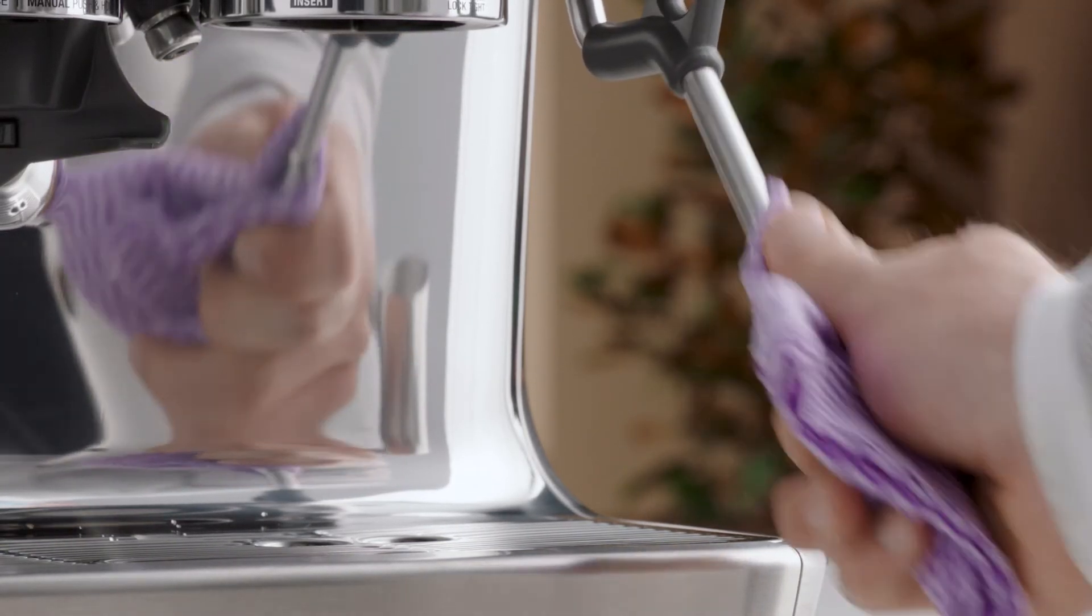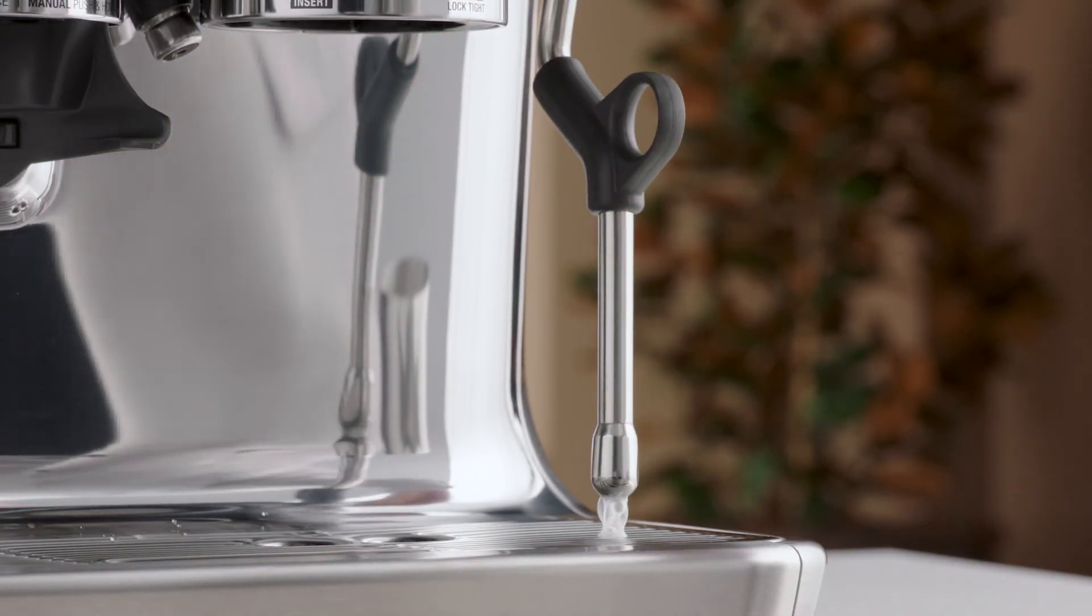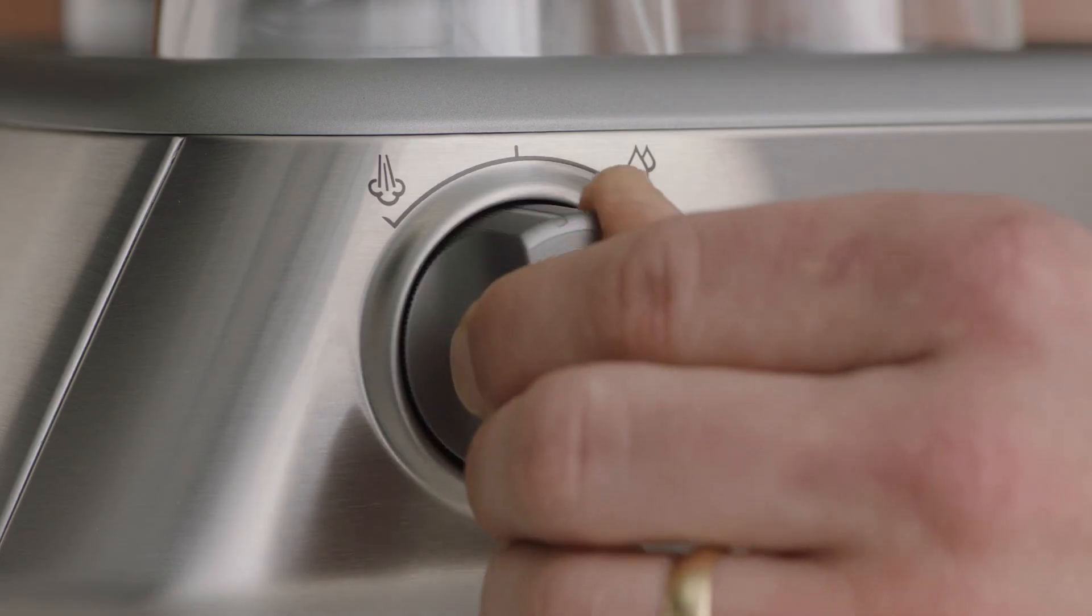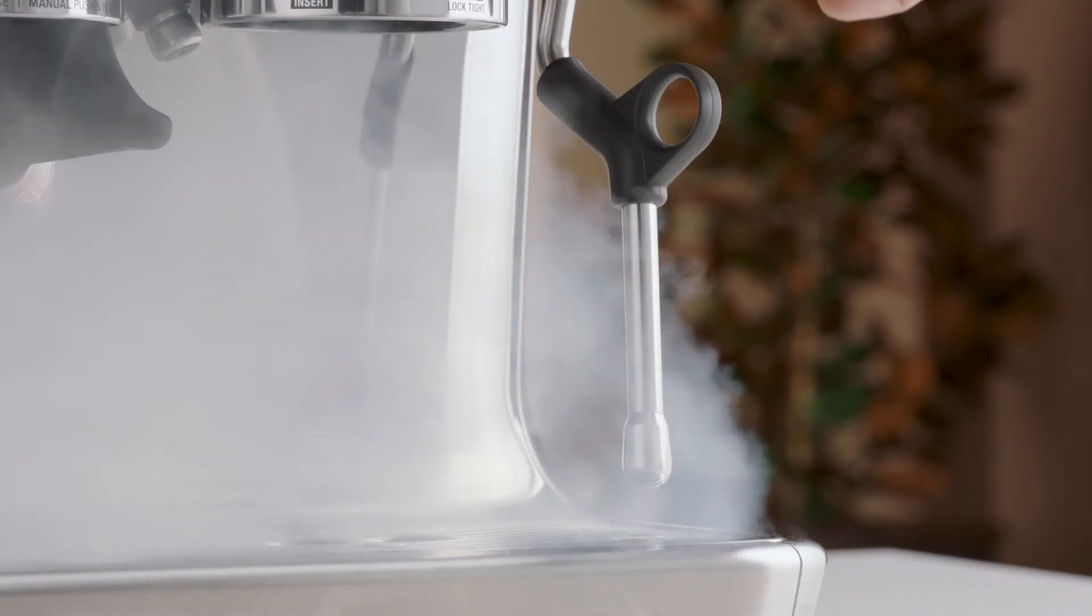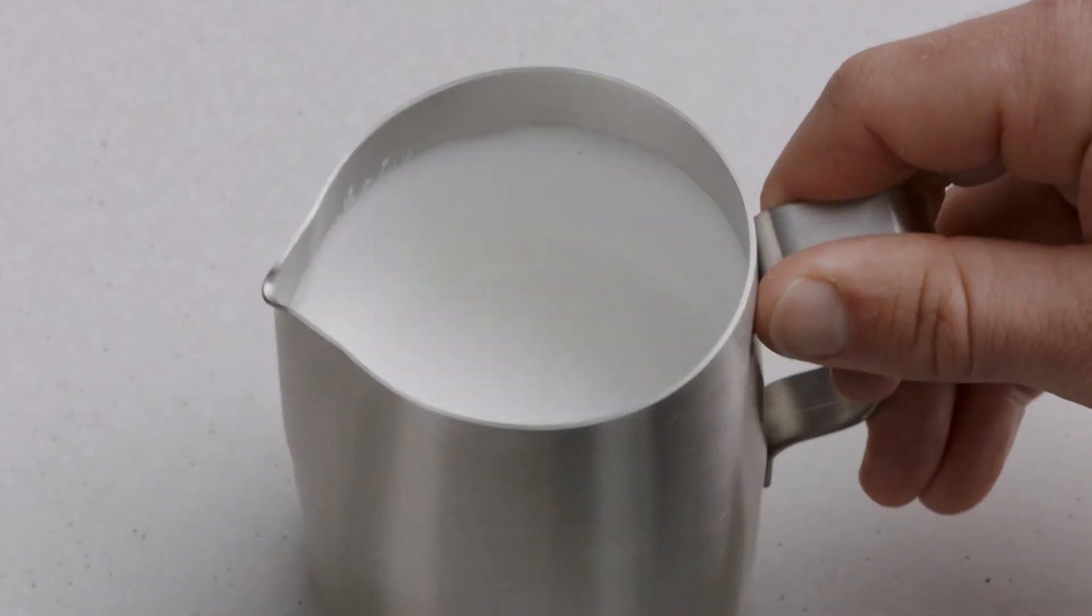Set the jug to one side. Wipe the wand and tip with a damp cloth. Position the steam tip above the drip tray and turn the steam dial to purge any residual milk for a few seconds before returning it back to the vertical position.